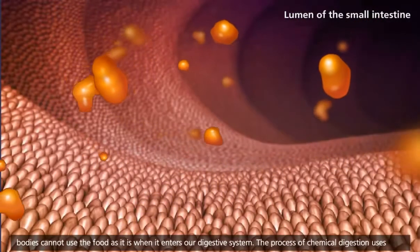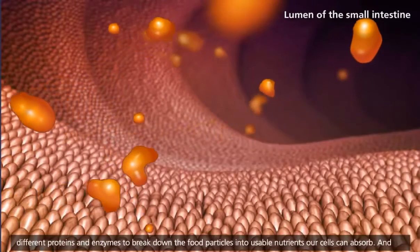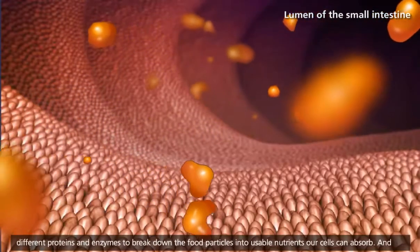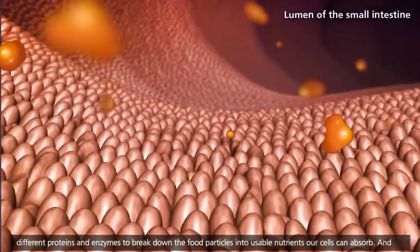The process of chemical digestion uses different proteins and enzymes to break down the food particles into usable nutrients our cells can absorb.